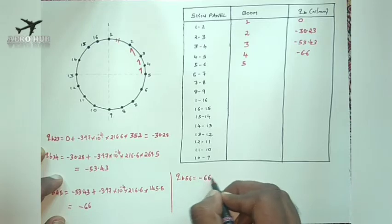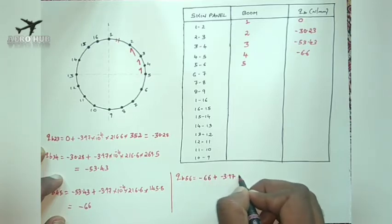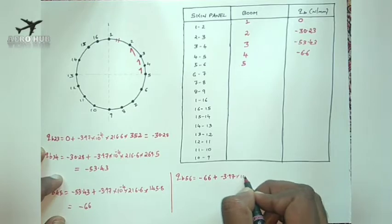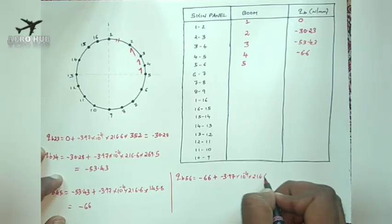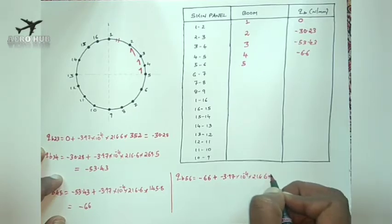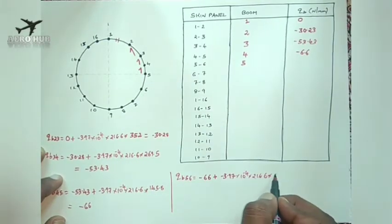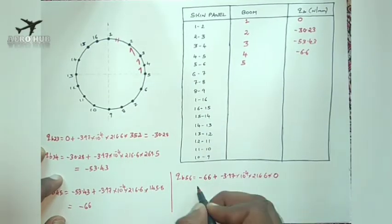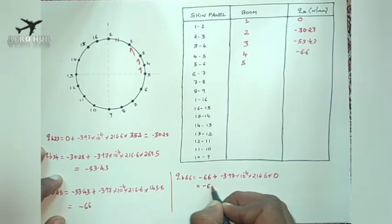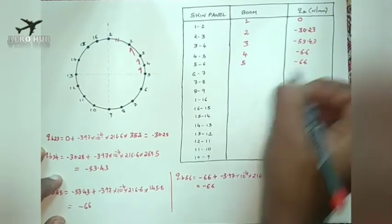QB5,6 equals the previous skin panel shear flow of minus 66, plus minus 3.97 into 10 power minus 4 into 216.6, into the value of Y for boom area number 5, which is 0. So this part becomes 0, and QB5,6 will be minus 66 N/mm.